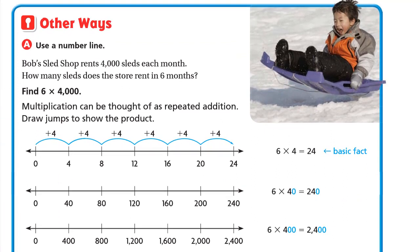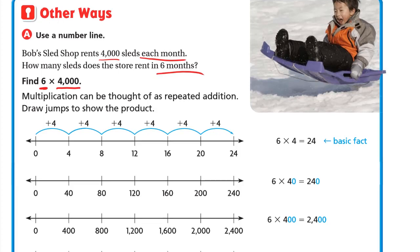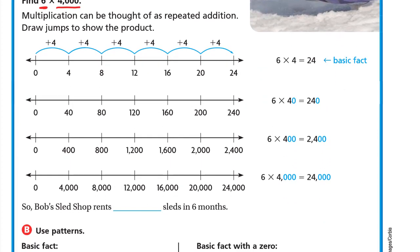Another way is to use a number line. Bob's Sledgehop rents 4,000 sleds each month — how many sleds does the store rent in six months? Instead of adding 4,000 six times, we can just multiply 6 by 4,000. Multiplication can be thought of as repeated addition. Draw jumps to show the product: 6 times 4 means we add 4 six times.